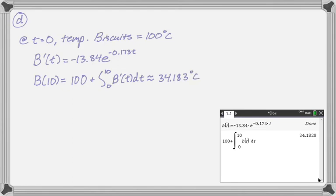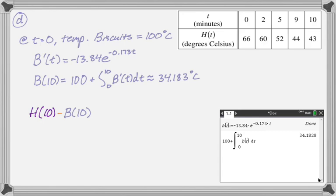And then we're trying to find how much cooler are the biscuits than the tea? So that would be H because H is the tea temperature. H(10) minus B(10). I'm going to need my table back to find H(10). So H(10) is 43. So I'm doing 43 minus 34.183. Use the calculator. I got 8.817 degrees Celsius.